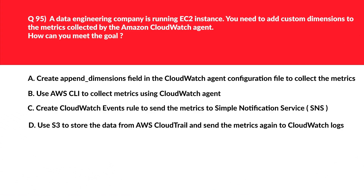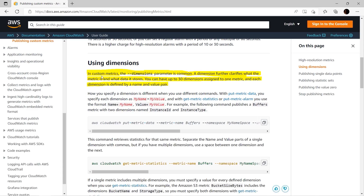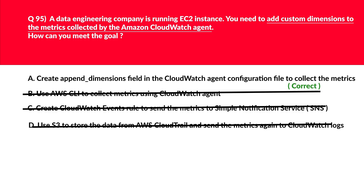This seems to be a pretty straightforward question. Whenever you see keywords like adding custom dimensions to metrics, just think about the append dimension field and you should get your answer. Hence, we'll keep option A and reject the rest, since it references appending dimensions. As noted in the official documentation: in custom metrics, the dimension parameter is common — a dimension further clarifies what the metric is and what data it stores. You can have up to 30 dimensions assigned to one metric, each defined by a name and value pair. Hence, we'll lock A as the correct answer.